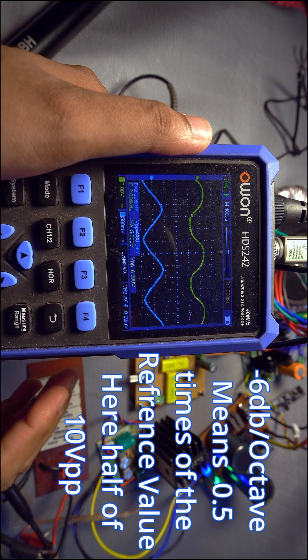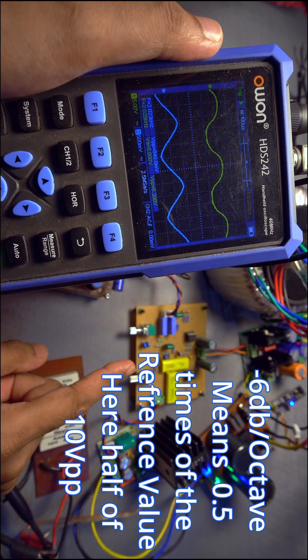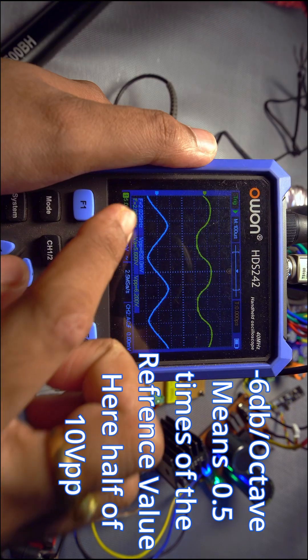So now we can say that this board is a minus 6 dB per octave high-pass filter.